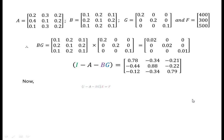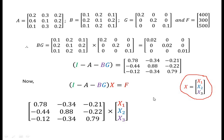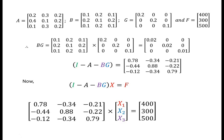Now, (I minus A minus BG) into X equal to F, where we replace the value of I minus A minus BG with this matrix, X is the output vector — a vector of x1, x2, and x3 — and F is the final demand vector, which is a vector of 400, 300, and 500.